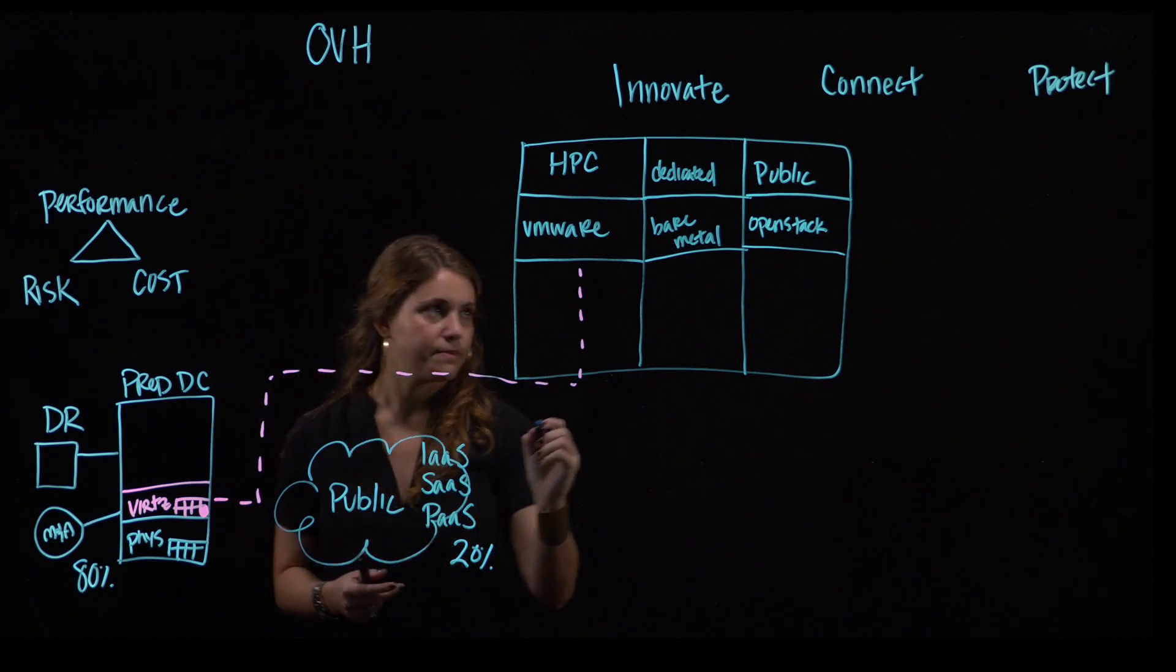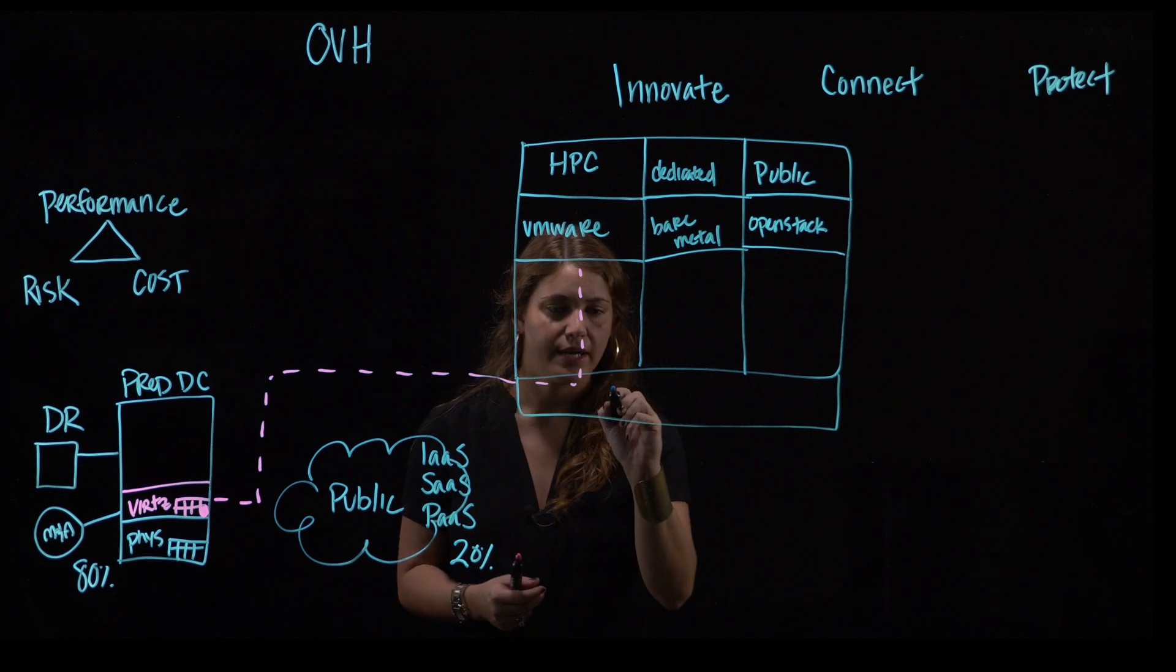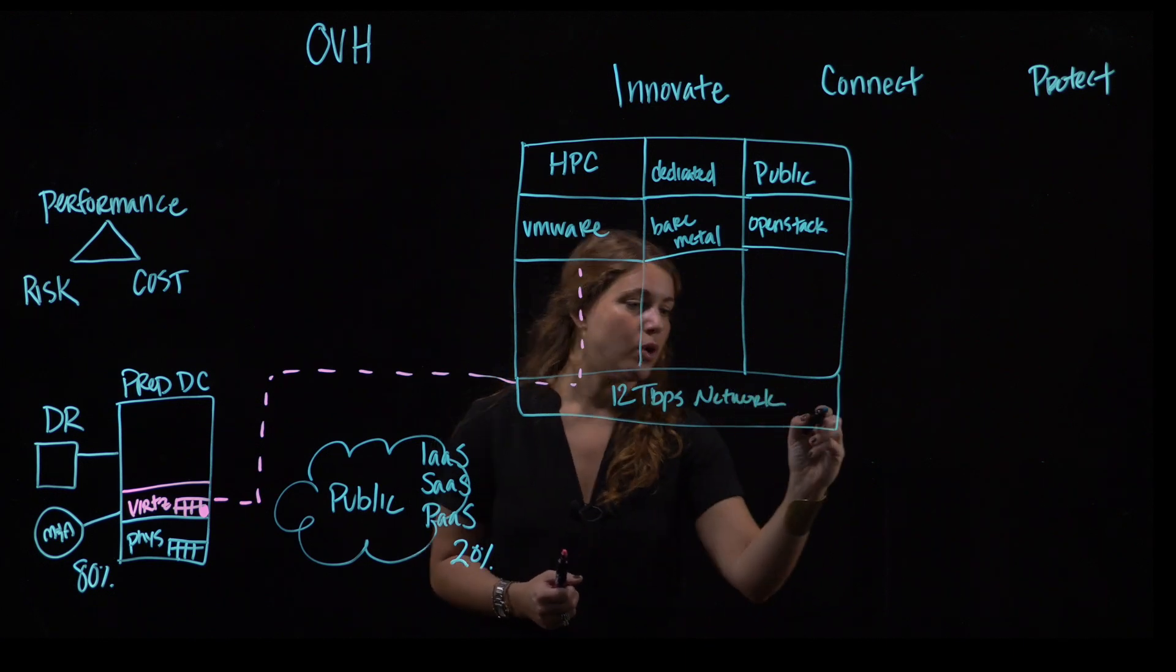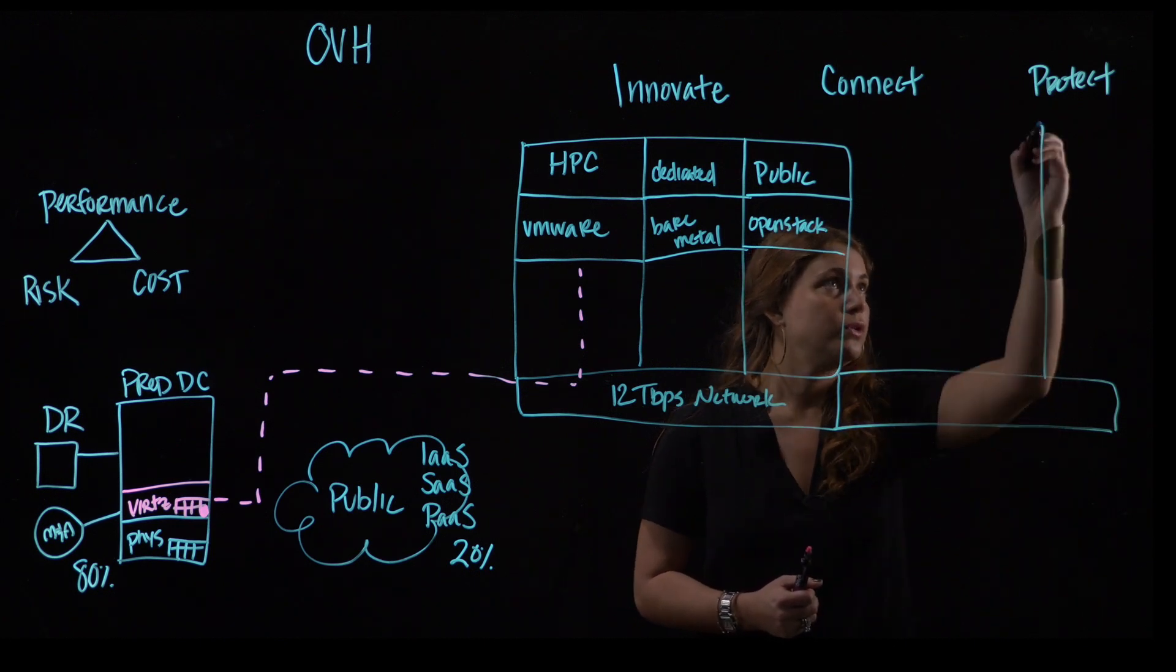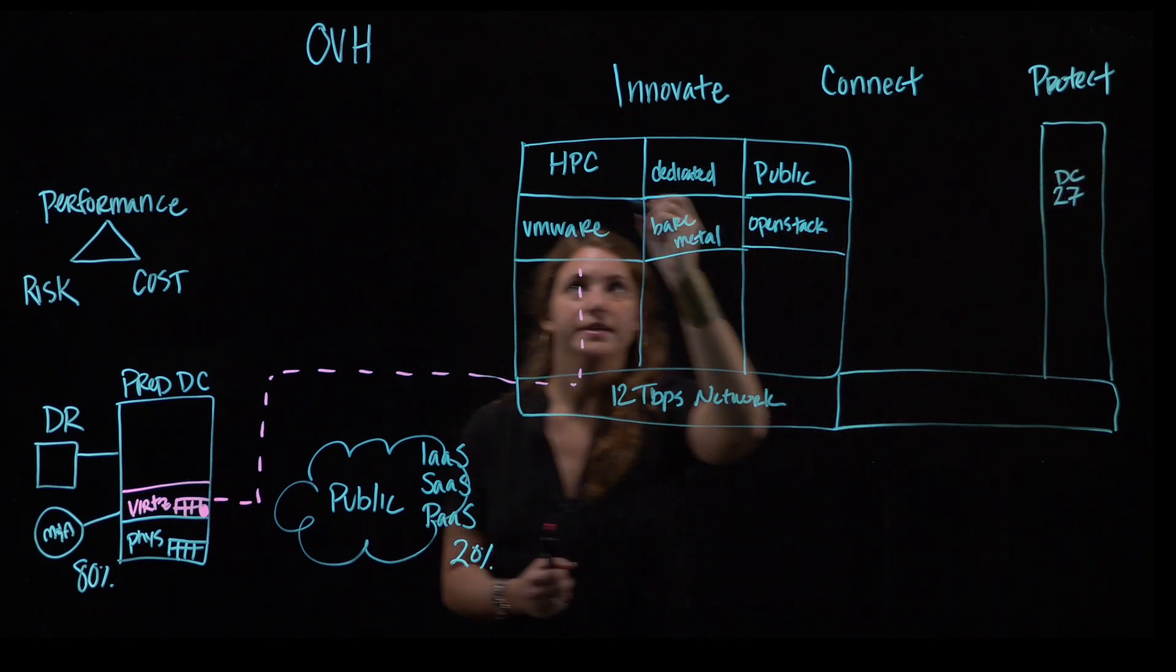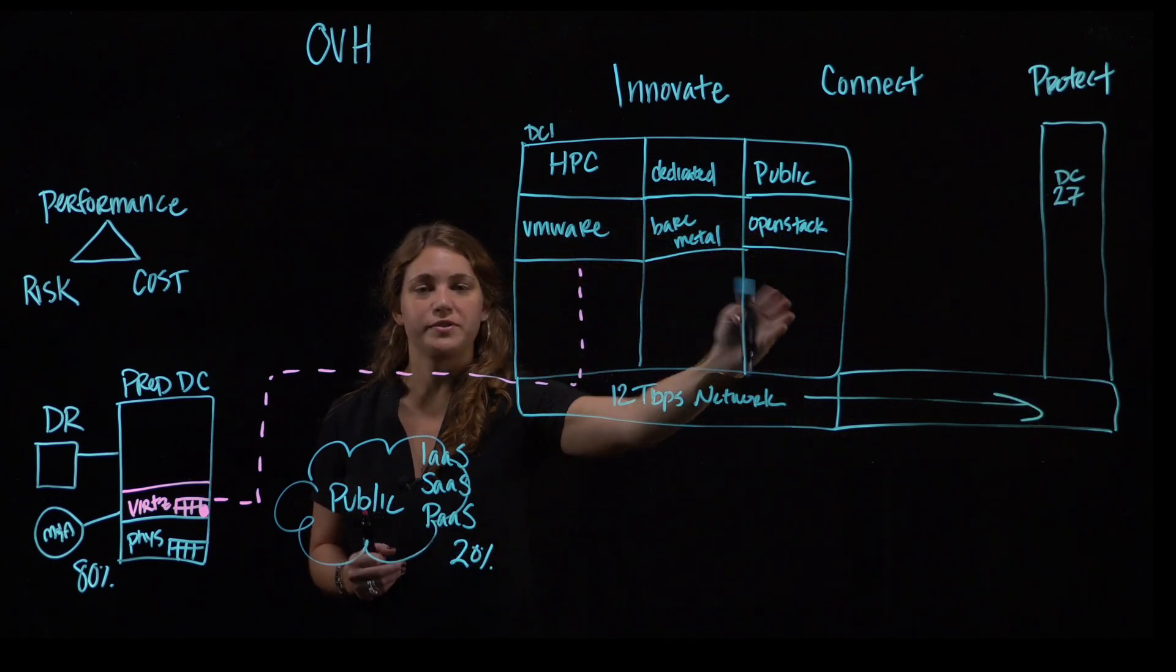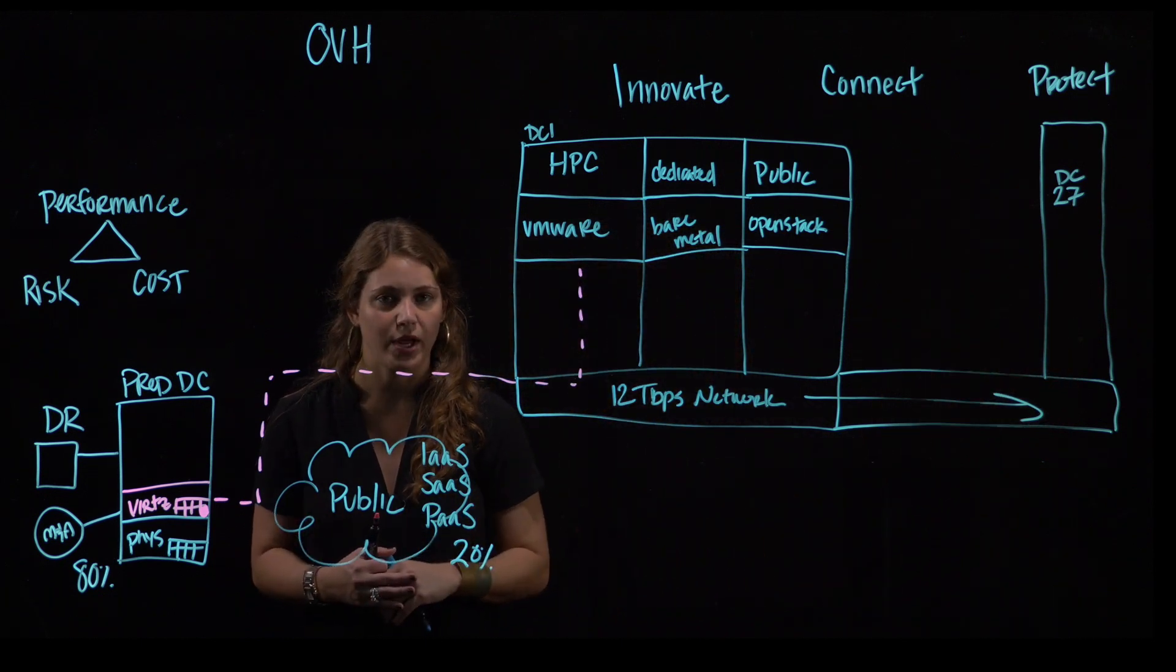Now let's talk a little bit about Connect. Not only can you connect all of these across our 12 terabit per second global network, but you can also connect all of these to our additional data centers. And let's call this data center number 27 and this data center number one via the same network. So connecting all services within one data center, connecting all services across data centers, all across the same layer two.